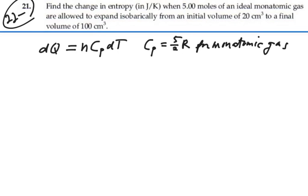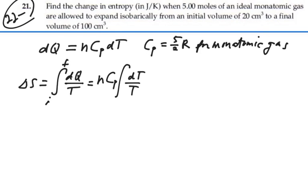So the change in entropy is going to be integration from initial to final of dQ over T. As we write it, n and molar-specific heat at constant pressure being constants, take those out of the integral, we'll have dT over T from initial to final. So this would be n times molar-specific heat at constant pressure times the natural log of our final temperature over our initial temperature.